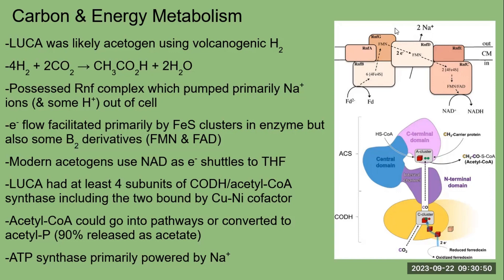Bacteria and archaea both have carbon monoxide dehydrogenase enzymes with five subunits, but each domain possesses one subunit absent in the other. This means that LUCA either had four subunits and bacteria and archaea each evolved their own additional subunit, or LUCA had all six subunits and one was lost in each lineage. Of the four subunits certainly present in LUCA, two are known to contain copper-nickel cofactors, suggesting this feature could be ancient. Once acetyl-CoA is produced, it can either be fed into biosynthesis pathways or reacted with orthophosphate to replenish ATP and be released as acetate. Ninety percent of the time, the latter is the case. The ATP synthase of LUCA would primarily be powered by the influx of sodium ions due to their greater abundance, but to a lesser extent, protons as well.